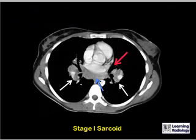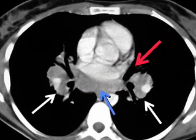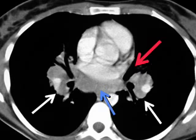This is a CT scan of a patient with stage 1 sarcoid. The white arrows point to the bilateral hilar adenopathy, the blue arrow to some subcarinal adenopathy, and the red arrow shows the separation between the heart and the right hilar adenopathy.